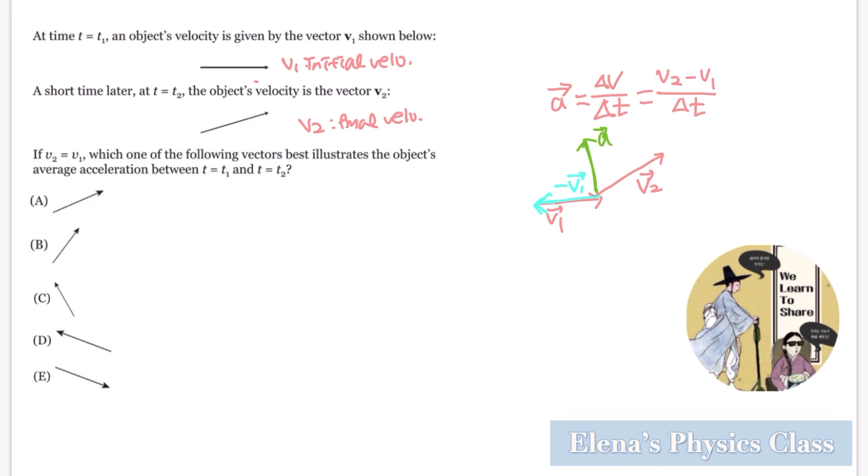And then as the magnitude of both the velocity is the same, thus a will bisect the angle between v2 and minus v1. So your acceleration vector will look like this, c. So c will be the answer. And thanks for watching.